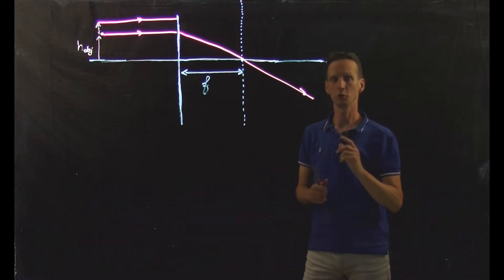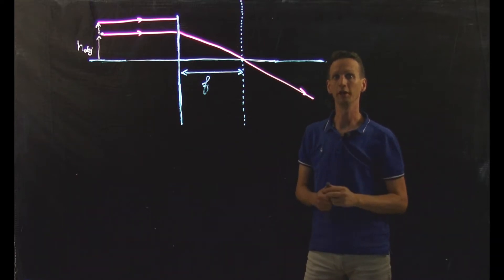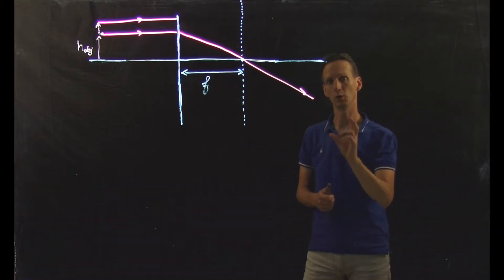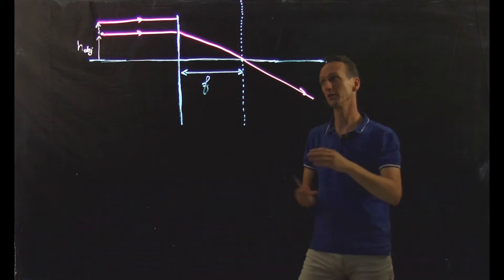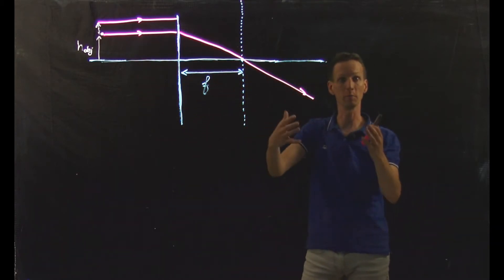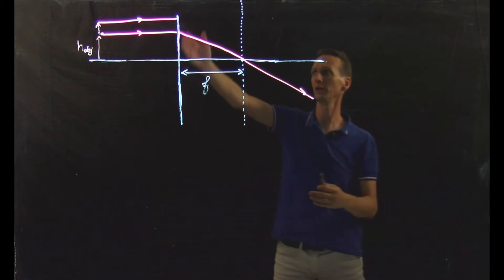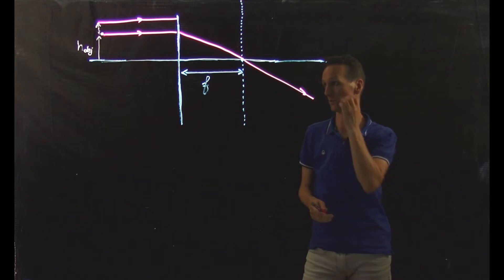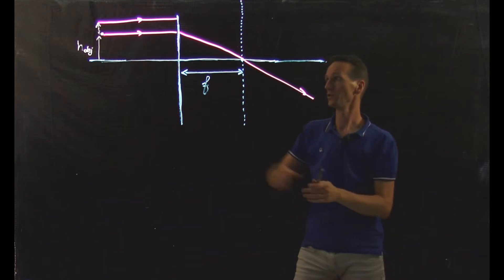Before, we looked at the situation for an ideal lens. We will now look at what happens if the lens behaves non-ideally. Typically, all lenses will have a little bit of non-ideal behavior. For instance, if we look at rays going through the thinner part of the lens, or at an area where the lens surface is more curved, leading to a higher deflection of the beam.